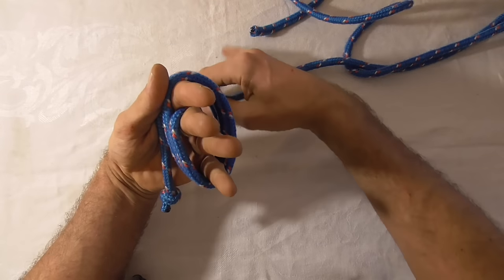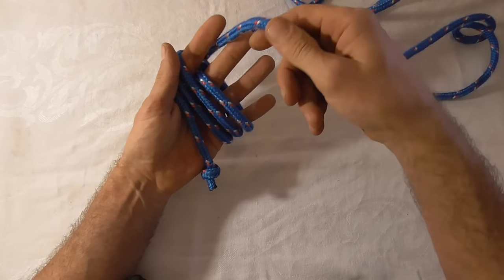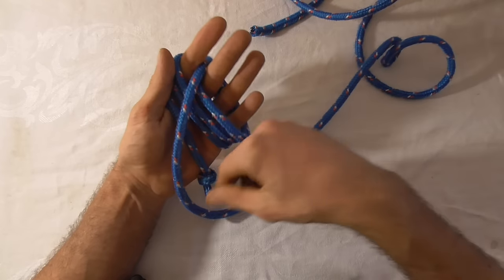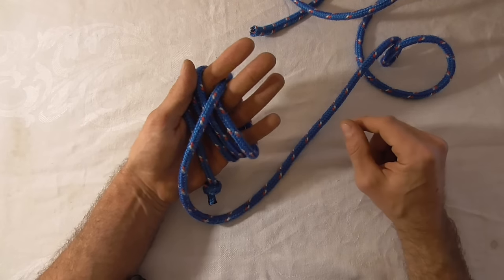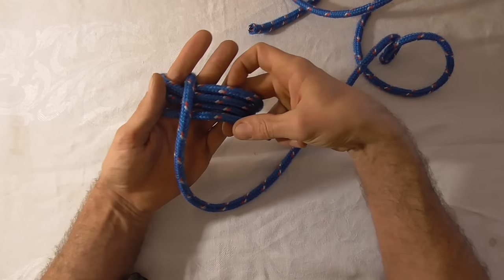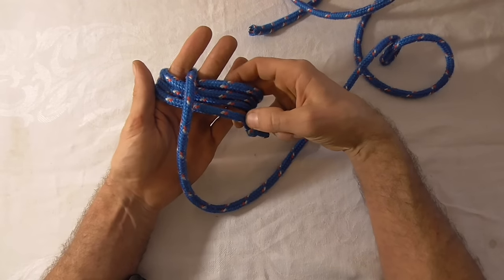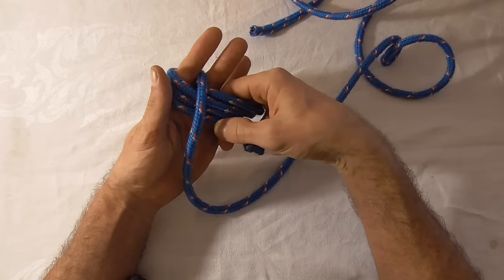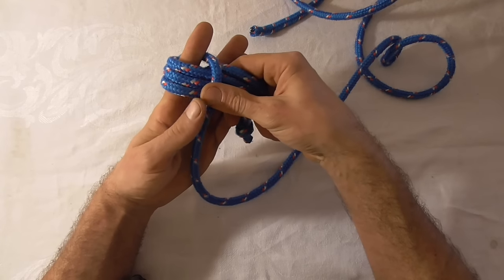Now I want to start wrapping in the opposite direction. So that's going to come back through my index finger and my middle finger. So it should look like that. And I'm going to gently take this whole bundle off my hand.